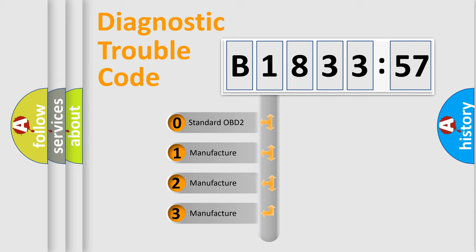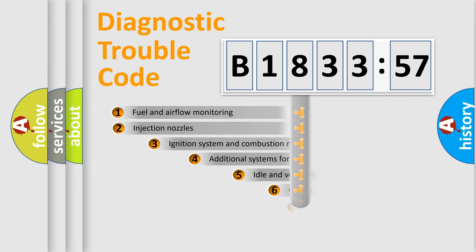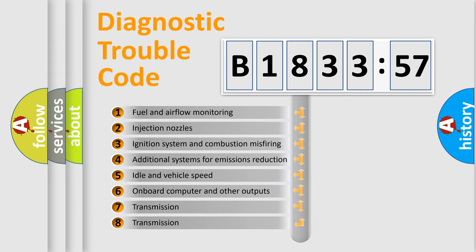This distribution is defined in the first character code. If the second character is expressed as zero, it is a standardized error. In the case of numbers 1, 2, or 3, it is a more specific expression of the car-specific error.